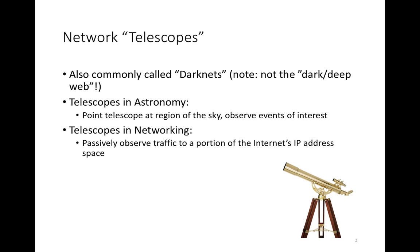Occasionally we will also talk about gray nets. A gray net is a partially populated network such that there are a few hosts. The analogy here is to telescopes in astronomy — in astronomy we point a telescope at a region of the sky and we passively observe events of interest. Similarly, with a network telescope we're going to point a telescope at a portion of the internet's IP address space and passively observe what traffic arrives.